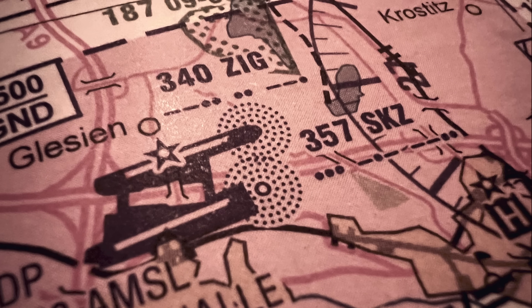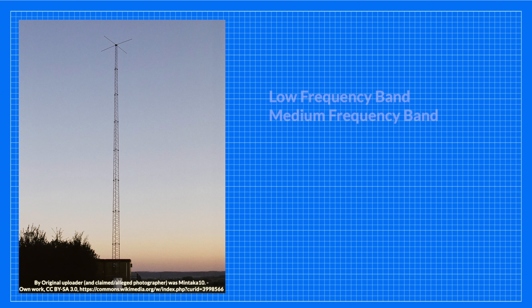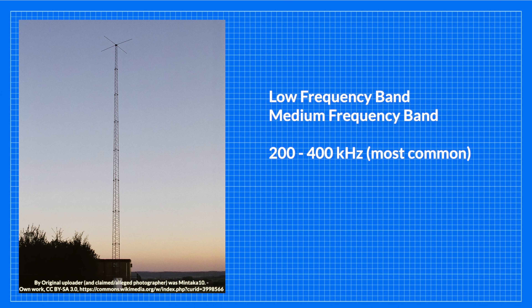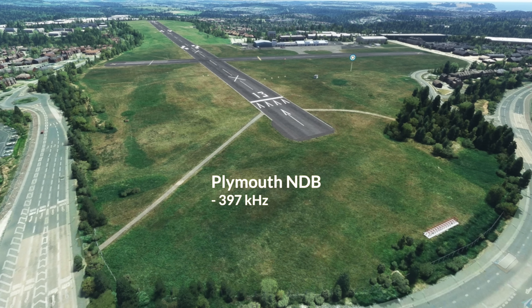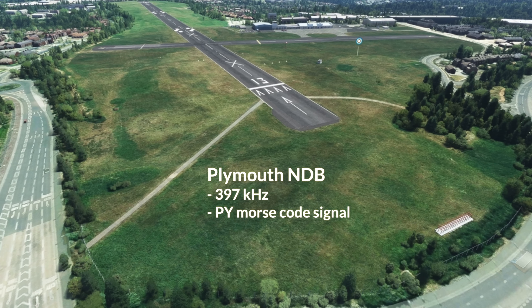However, the shining light cannot tell your position relative to it. To avoid confusion and ensure you are flying toward the correct beacon, each NDB transmits its identification in the low or medium frequency bands — somewhere between 200 and 400 kilohertz being most common, but they can go all the way up to 1750 kilohertz. Each NDB transmits its own two or three letter Morse code signal. For example, the Plymouth NDB has a frequency of 397 kilohertz and is identified by listening to the Papa Yankee Morse code signal. The frequency and identification information are on the radio navigation or approach charts you carry in the cockpit.